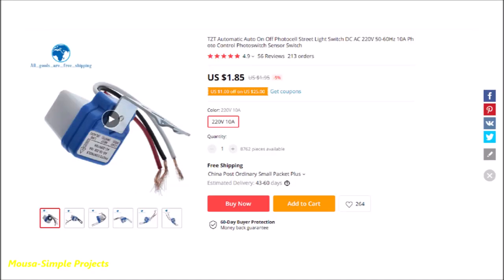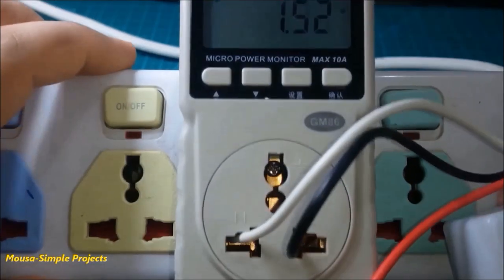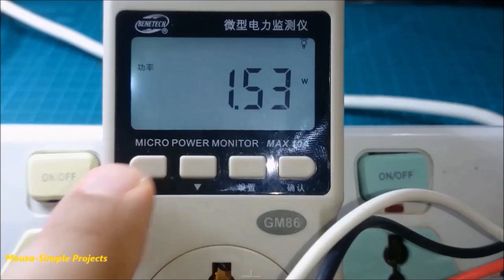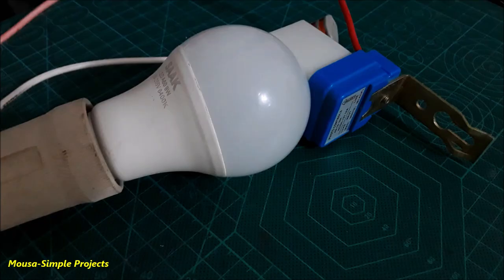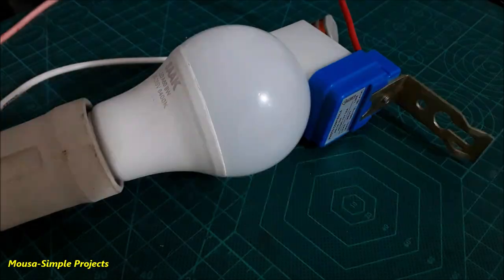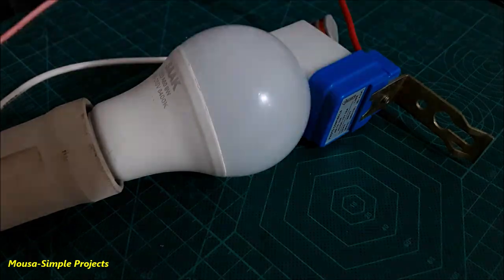However, nowadays you can buy them for less than two bucks, but the problem is they consume some power even when no load is connected. The other problem is that if you put the lamp and the photo cell near each other, the lamp starts blinking.